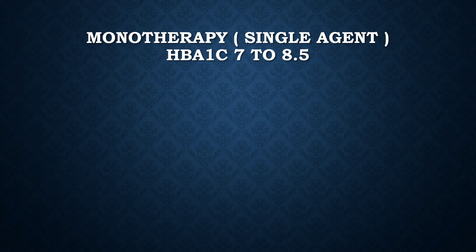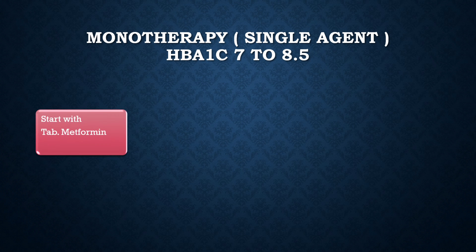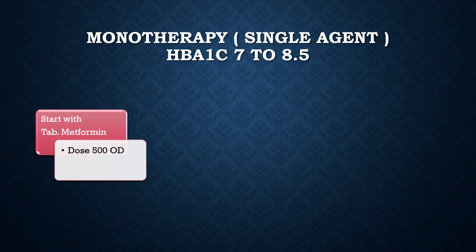If the HbA1c value is between 7 to 8.5, we should go for single agent monotherapy. We start with tablet metformin. If the serum creatinine value is normal, the dose should be 500 mg once a day.